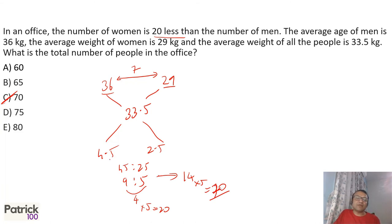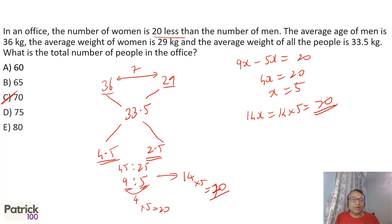I repeat. Do allegation, we get a ratio as 4.5 and 2.5 or 9 is to 5. You can also do 9x minus 5x has to be equal to 20, the difference between people. 4x is 20, x is 5. Total number of people is 14x, which is 14 into 5, which will give you 70. That will be the answer.